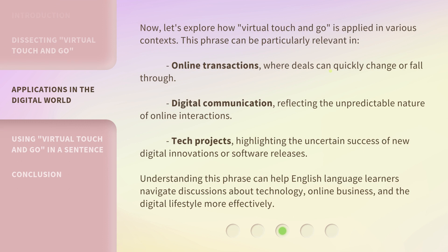Now, let's explore how Virtual Touch and Go is applied in various contexts. This phrase can be particularly relevant in online transactions, where deals can quickly change or fall through. Digital communication, reflecting the unpredictable nature of online interactions. Tech projects, highlighting the uncertain success of new digital innovations or software releases. Understanding this phrase can help English language learners navigate discussions about technology, online business, and the digital lifestyle more effectively.